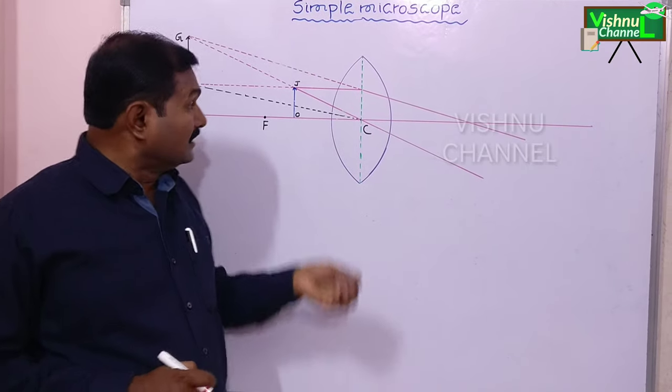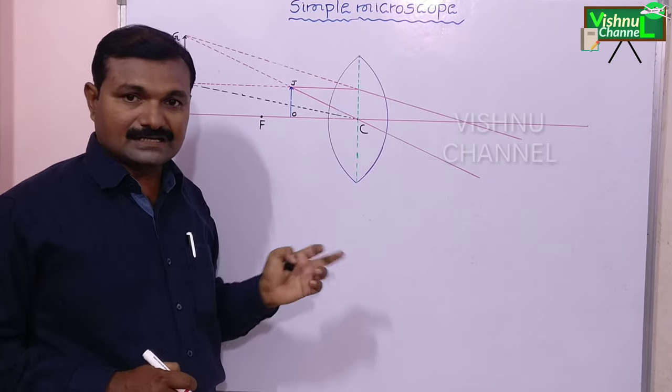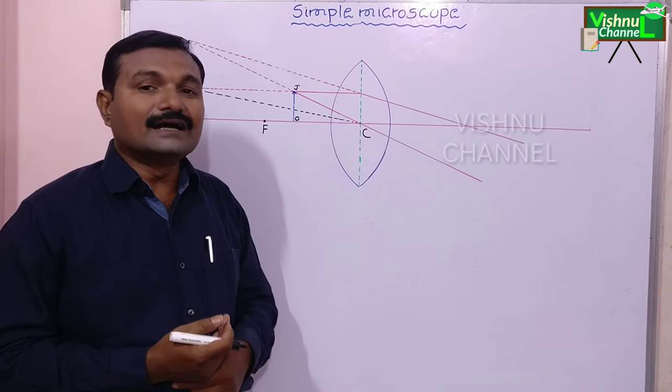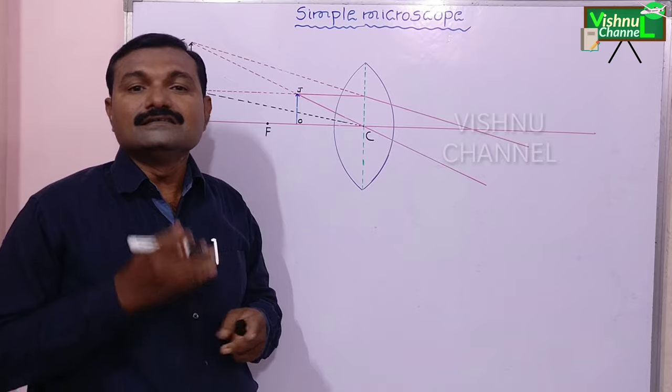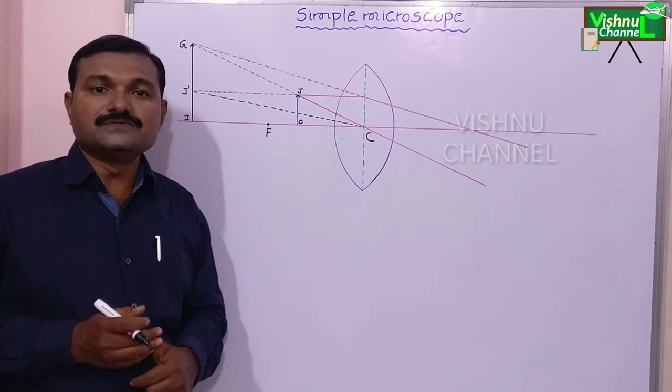If the object is placed between principal focus and optic center, this is the same side of the object.